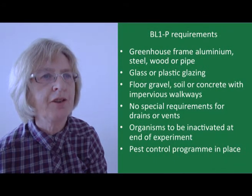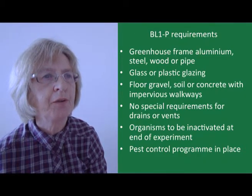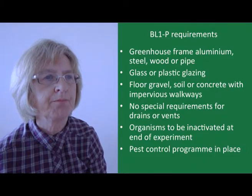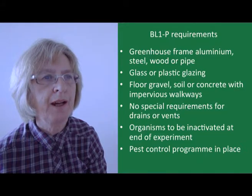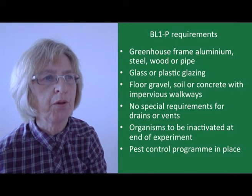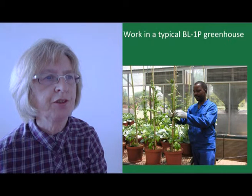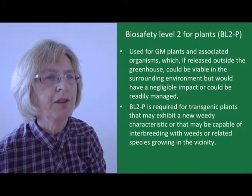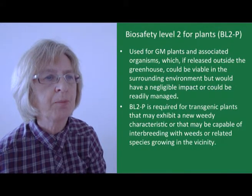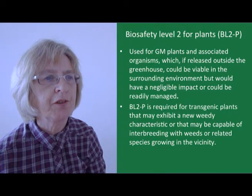The physical requirements at BL1P are fairly generic for greenhouses, with various options in terms of the greenhouse frame and either glass or plastic glazing. The floor can be gravel, soil or concrete, but the walkway should be impervious. Ventilation may involve roof or side vents, fans, cooling pads or a fog system. Organisms should be inactivated at the end of the experiment, and a pest control program should be in place. Biosafety level 2 for plants is recommended for GM plants and associated organisms which could be viable in the surrounding environment, but would have a negligible impact or could be readily managed. This level is generally required for transgenic plants that may exhibit a new weedy characteristic or that may be capable of interbreeding with weeds or related species growing in the vicinity.